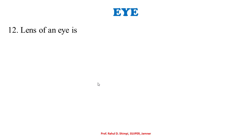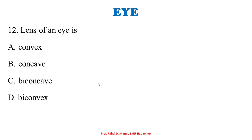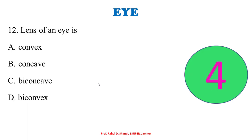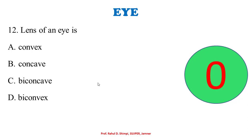The lens of the eye is: A: convex. B: concave. C: biconcave. D: biconvex. This is a straightforward question — the answer is biconvex.